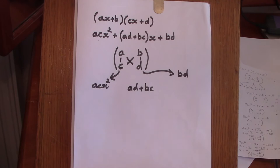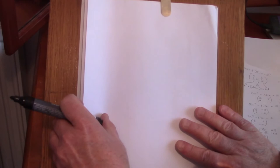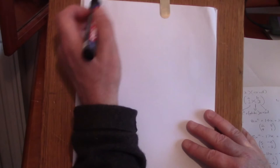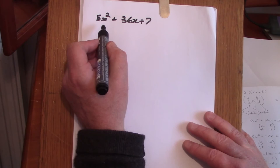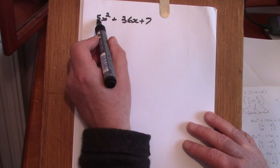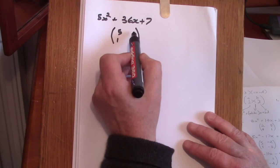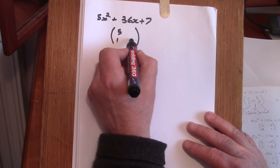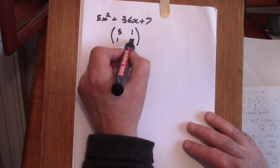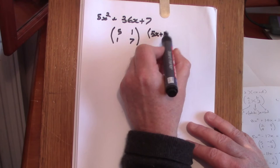I'm going to show six examples of where this matrix form using the vertical and crosswise pattern can be of great use. We'll start with 5x squared plus 36x plus 7. Both coefficients are prime, so in our matrix we must have a 5 and a 1, and the last two numbers must be a 7 and a 1. Considering the cross product, the only way to get 36 is with 7 and 1 arranged so that 5 times 7 plus 1 times 1 gives 35 plus 1 equals 36. From that we can immediately write the factored form as (5x + 1)(x + 7).